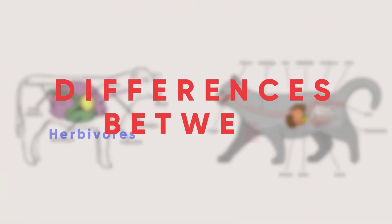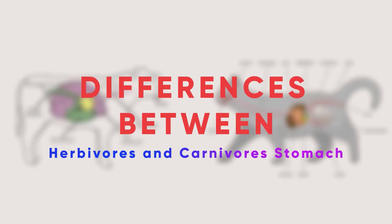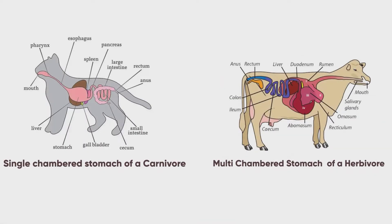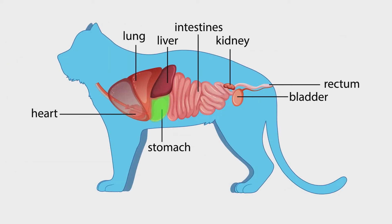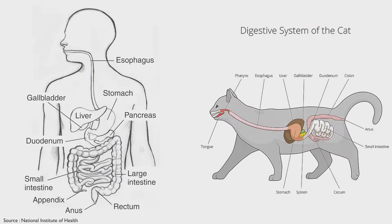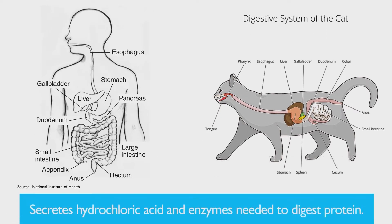Now let's go to the stomach. What's the difference between the stomach of herbivores and carnivores? Carnivores have a simple and single chambered stomach, whereas most herbivores have a complex multiple chambered stomach. Look at the stomach of this cat, which is really simple. Carnivores' stomach is comparable to the human stomach, which secretes hydrochloric acid and enzymes needed to digest protein.